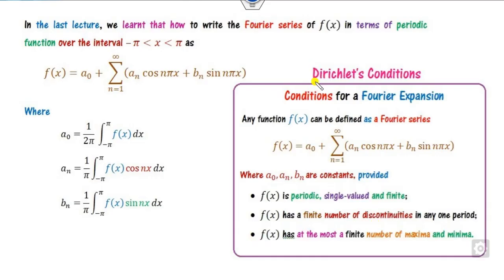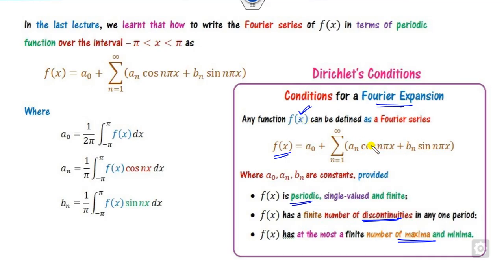The condition for convergence — or expansion of the Fourier series — is that the function f(x) must be periodic, must have a finite number of discontinuities, and must have a finite number of maxima and minima. Whenever these three properties are satisfied, you can expand f(x) in terms of the Fourier series, and these conditions are called Dirichlet's conditions.